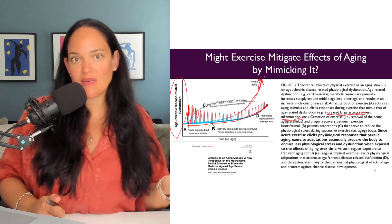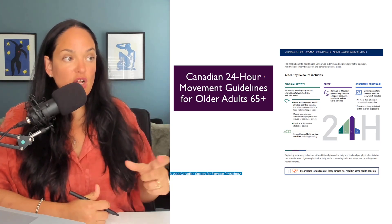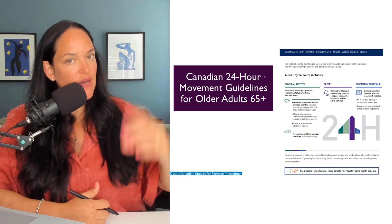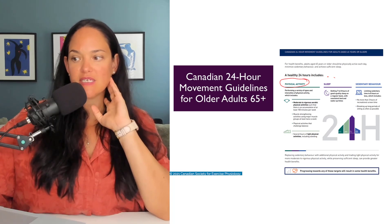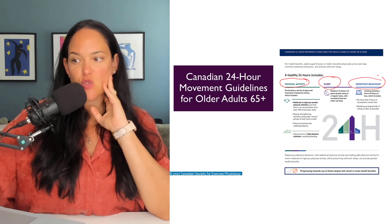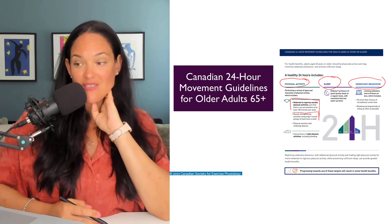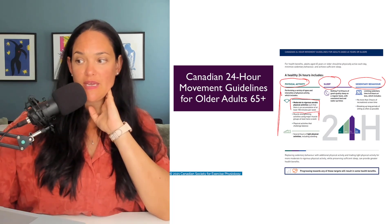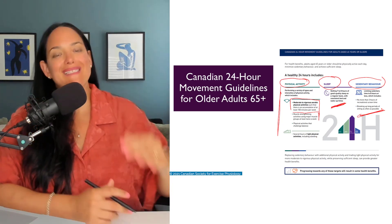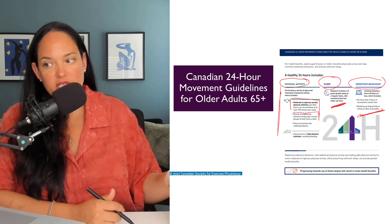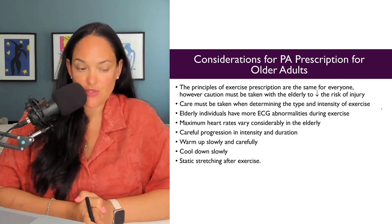Back to guidelines: CSEP, the Canadian Society for Exercise Physiology, recommends for adults 65 and older a 24-hour movement guideline broken into physical activity, sleep, and sedentary behavior. The advice of 150 minutes of physical activity per week is still there, along with muscle strengthening activities twice a week — the same as for adults. Sleep recommendations are similar at about 7–8 hours, and again reducing sedentary time. The guidelines are actually very similar to those for adults.